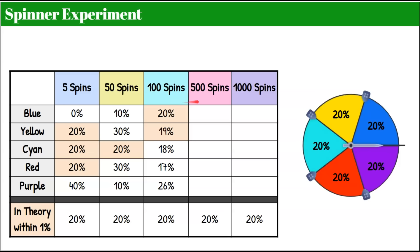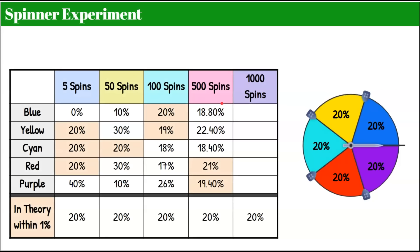I used the simulator and said spin the spinner 500 times. Here's what happened: 18.8% of the time, 22.4%, 18.4%, 21%, and 19.4%. In theory, each of them should have been 20%. All results were within about 2% of the theoretical probability — you can see these are very close. We're getting even closer, and there's nothing as far off as we saw before.